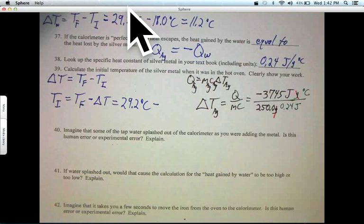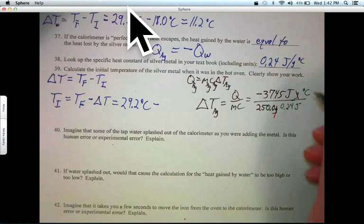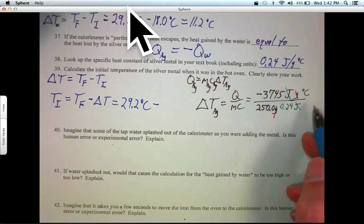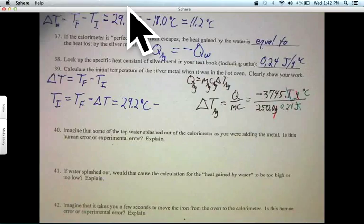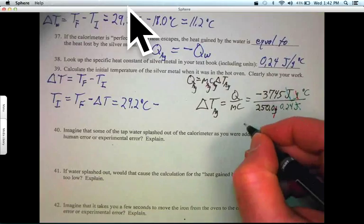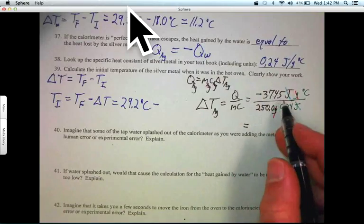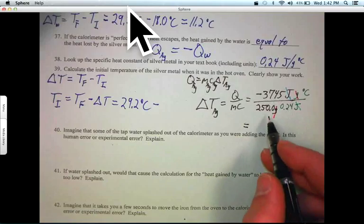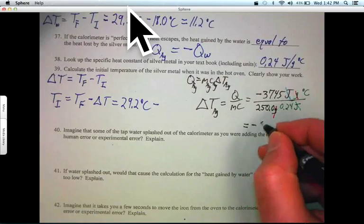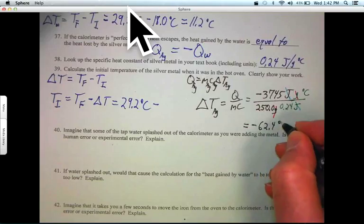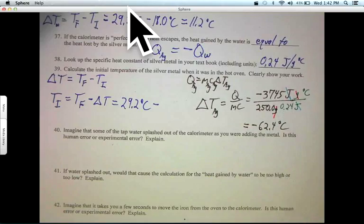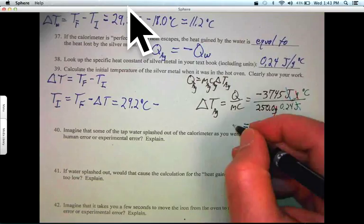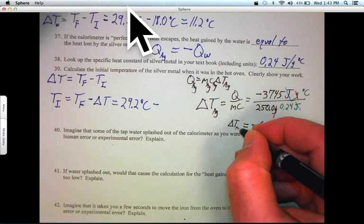Grams cancels grams and joules cancels joules. Degrees C, and that's what we wanted. So that equals minus 62.4 degrees C. So that's our delta T, delta T of the silver.